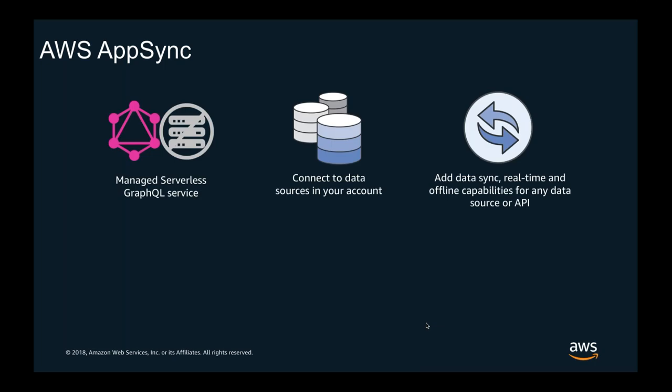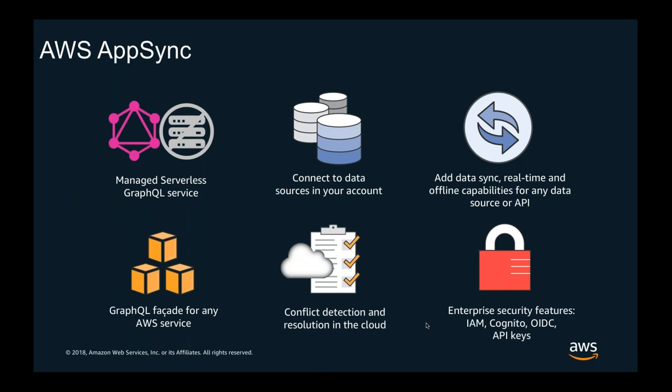AppSync connects your resources in your own AWS account, allowing you to make your data available in real time or offline. As it supports AWS Lambda — our serverless compute service — as a data source, you can use AppSync as a GraphQL facade for any AWS service through Lambda. It also allows you to perform conflict detection and resolution in the cloud instead of doing it in the client. AppSync integrates with AWS Identity and Access Management, Cognito User Pools, and API keys, providing powerful options to secure your API. There is also a new feature: you can use external OpenID Connect providers to authenticate and authorize your GraphQL calls.